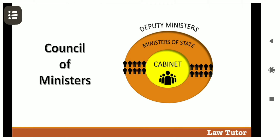Ministers of State are an outer circle and are of two kinds. Ministers of State with an independent charge have charge of a Ministry and do not report to a Cabinet Minister. A Minister of State without an independent charge is a Junior Minister who reports to a Cabinet Minister. A Minister of State is usually given a specific responsibility in that Ministry.